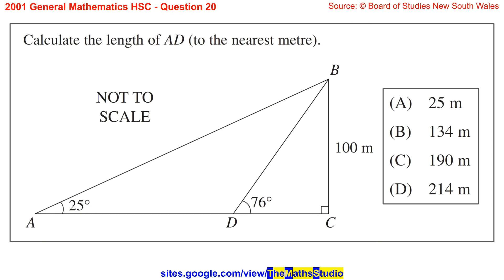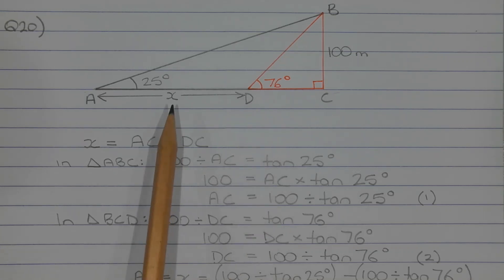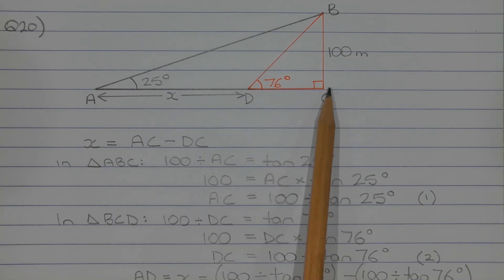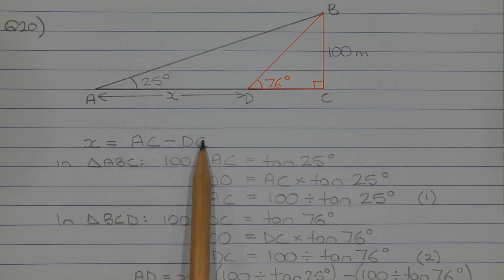Question 20: Calculate the length of AD to the nearest meter. The question is asking for the length of interval AD indicated by the pronumeral X, which is the difference between the length of interval AC and interval DC. Expressing this as an equation, we can write X equals AC minus DC.